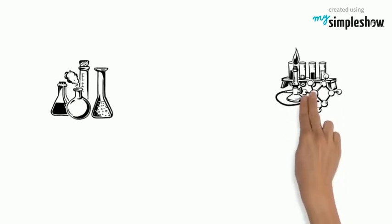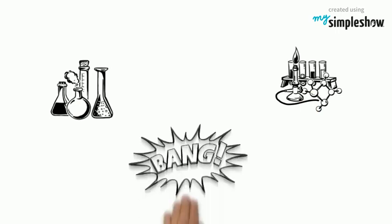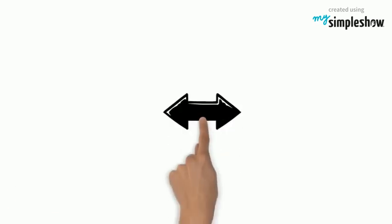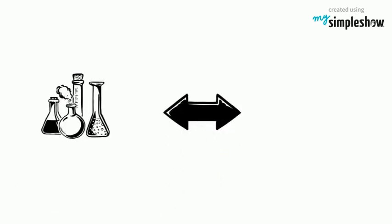The starting chemicals are called reactants, and they are written on the left-hand side of the equation. The products are written on the right, and the action is represented by an arrow. Sometimes the arrow can point both ways to show that a reaction can happen backwards and forwards.